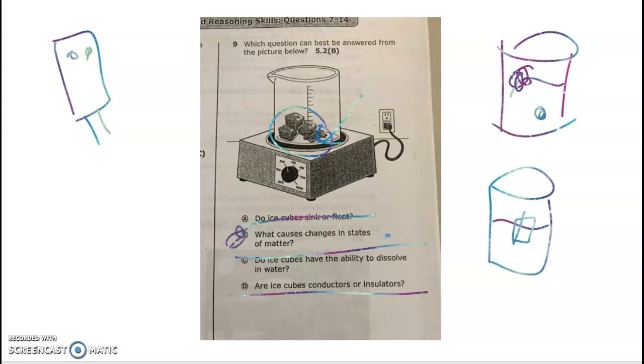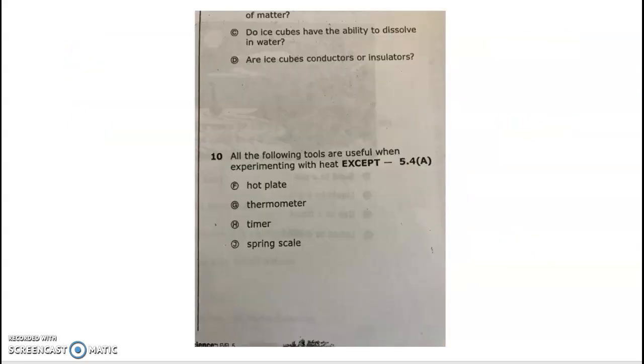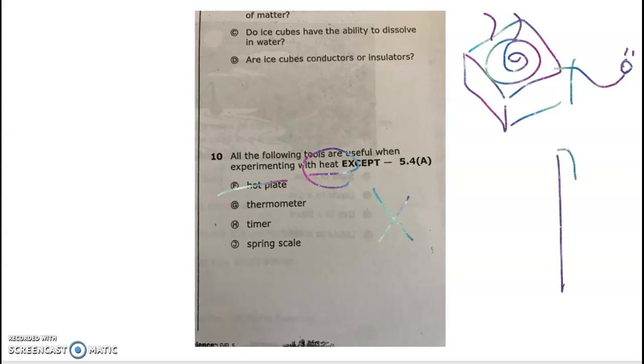Last one, number ten. All the following tools are useful when experimenting with heat except blank. We have a hot plate—remember that is our semi-cube looking object, our tool that's plugged into the wall, and it's got the little coil there and it produces heat. So that's useful when experimenting with heat. I want to know what's not useful. Hot plate good.